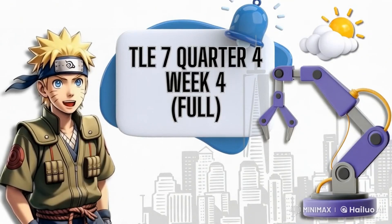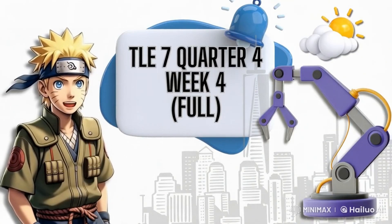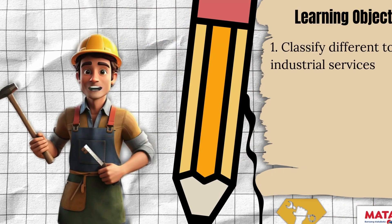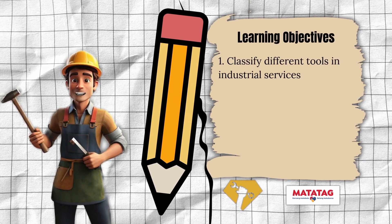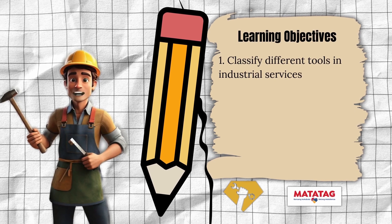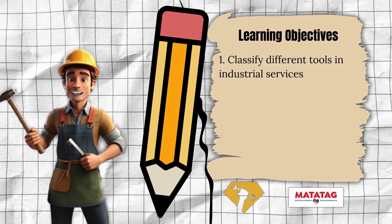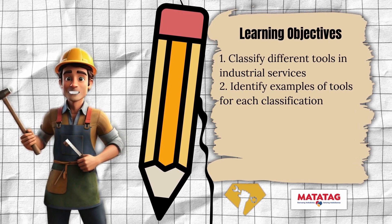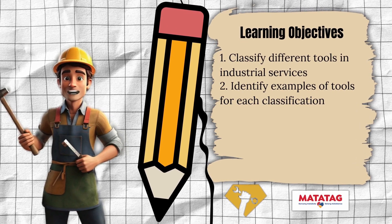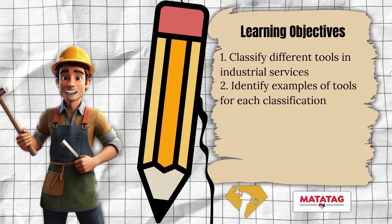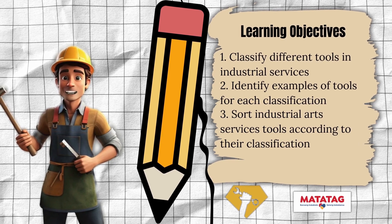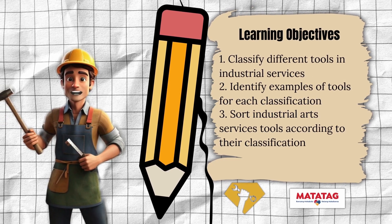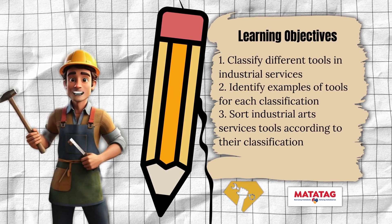Good day, everyone. This week, we are going to: first, classify different tools in industrial services; second, identify examples of tools for each classification; third, sort industrial art services tools according to their classification.